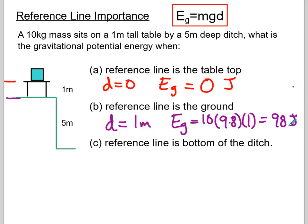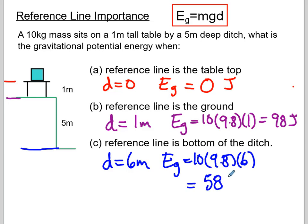Now reference line is the bottom of the ditch. So if I put my reference line down here, my d is now 6 meters, so my Eg is going to be 10 times 9.8 times 6, and if we punch that in our calculator, 588 joules. So now again the problem didn't change, we just changed where we were going to measure with respect to, where our reference line is.